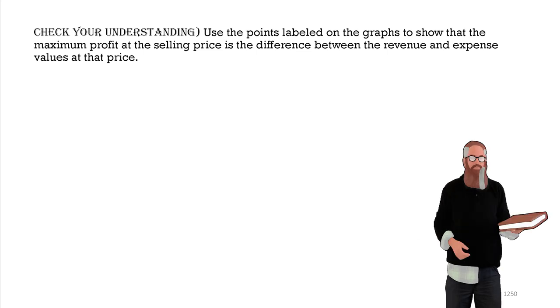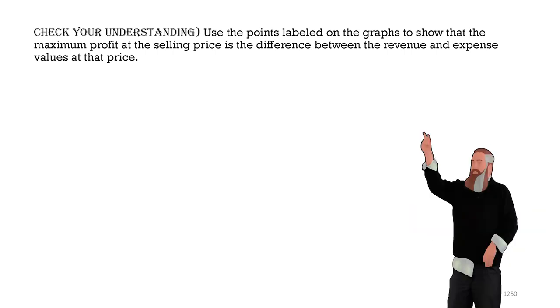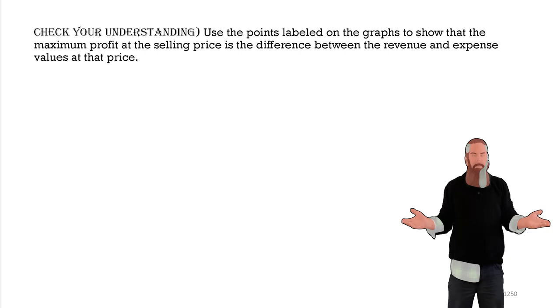Let's check our understanding. Use the points labeled on the graph to show that the maximum profit at the maximum selling prices is the difference between the revenue and expense value at that price.